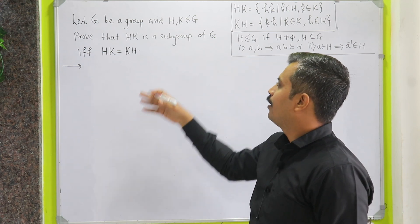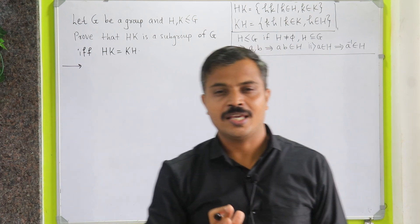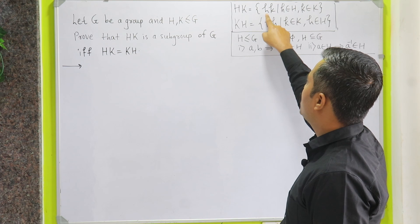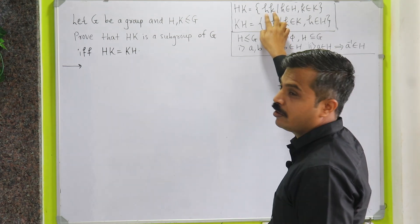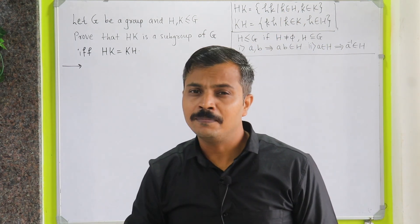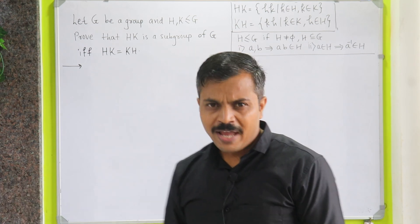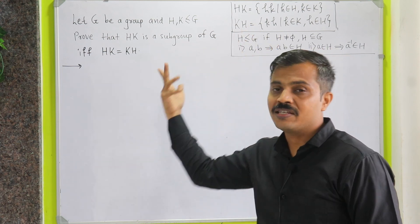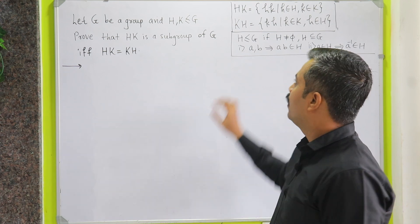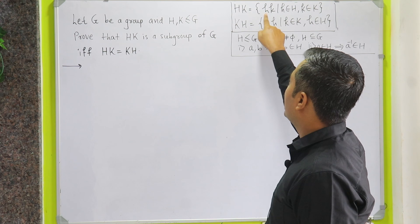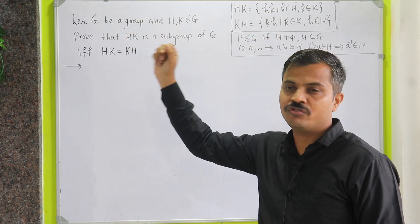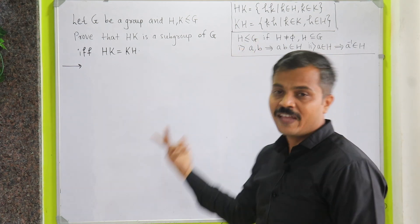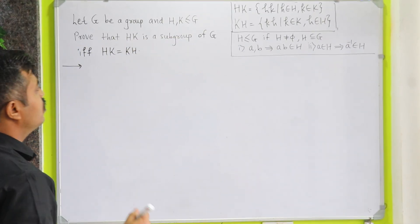Given a group G with H and K as subgroups of G, HK will be a subgroup of G if and only if HK equals KH. The set HK is the collection of elements of H multiplied by elements of K. Remember, multiplication here means the binary operation in the group — so in the group Z, HK would actually be H plus K. Similarly, KH is the collection of elements of K multiplied by elements of H.